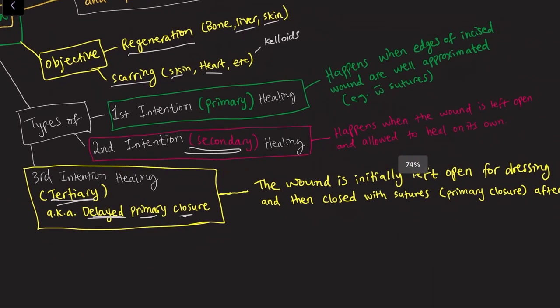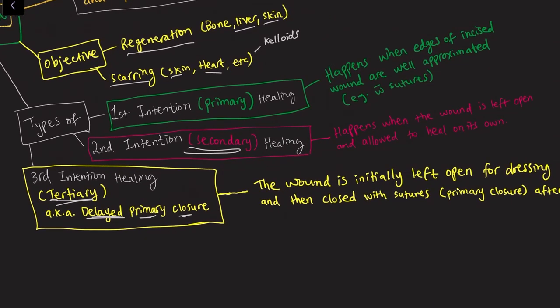Primary intention wound healing happens when the edges of the incised wound are well approximated — brought together, for example, with sutures. Surgical suturing is referred to as primary healing or first intention healing.